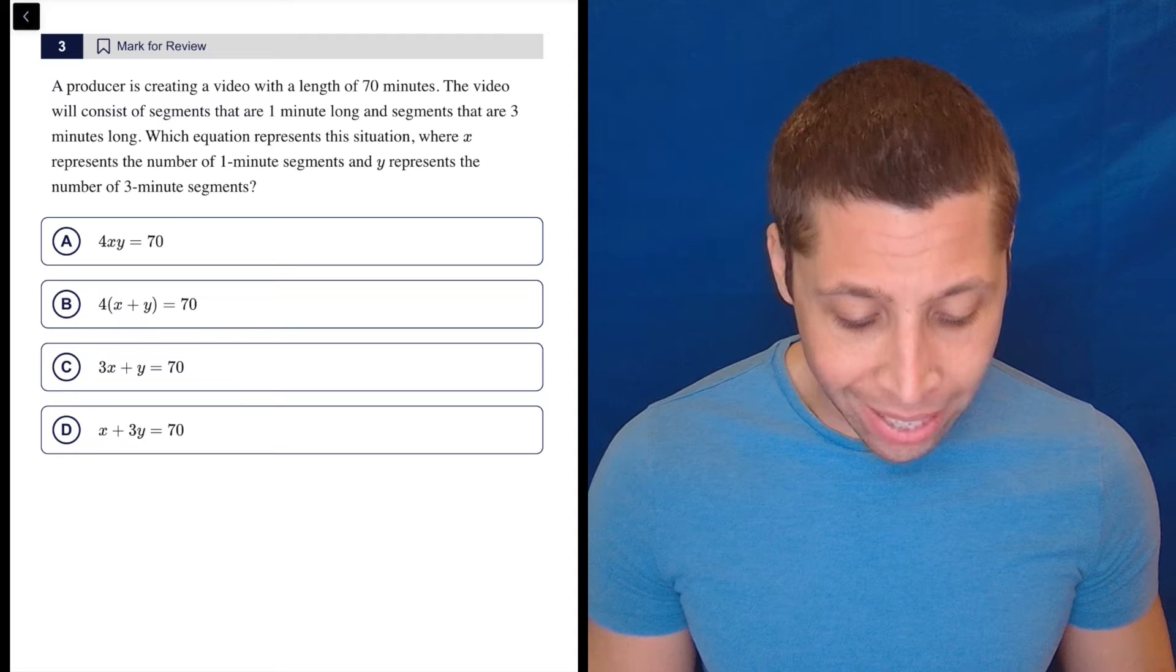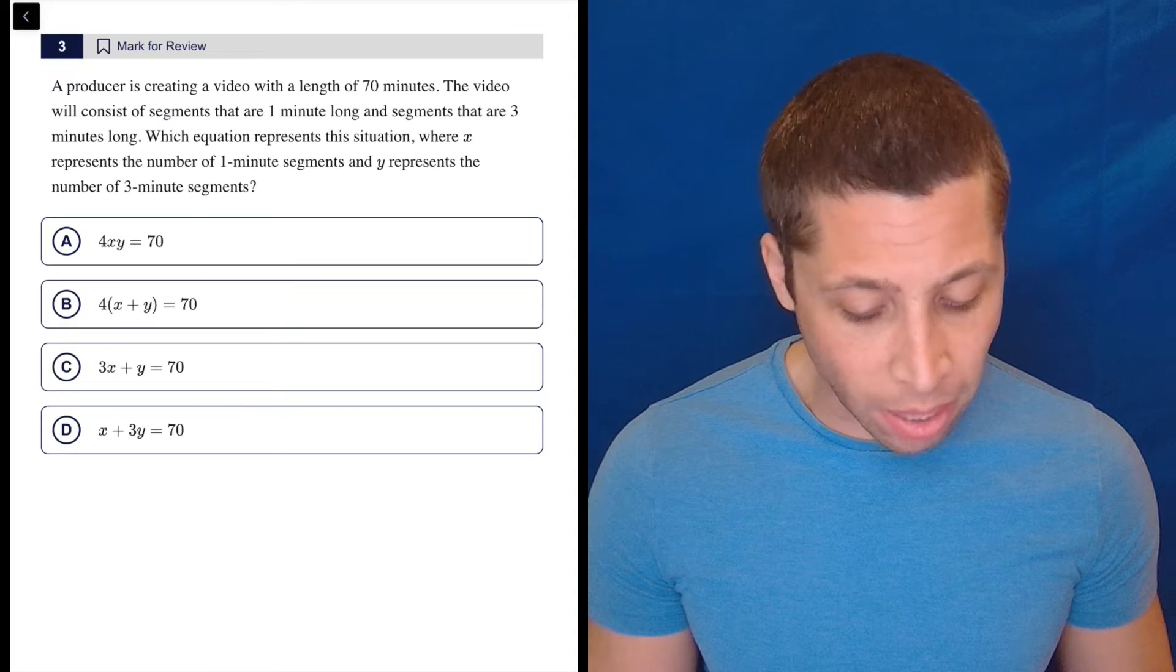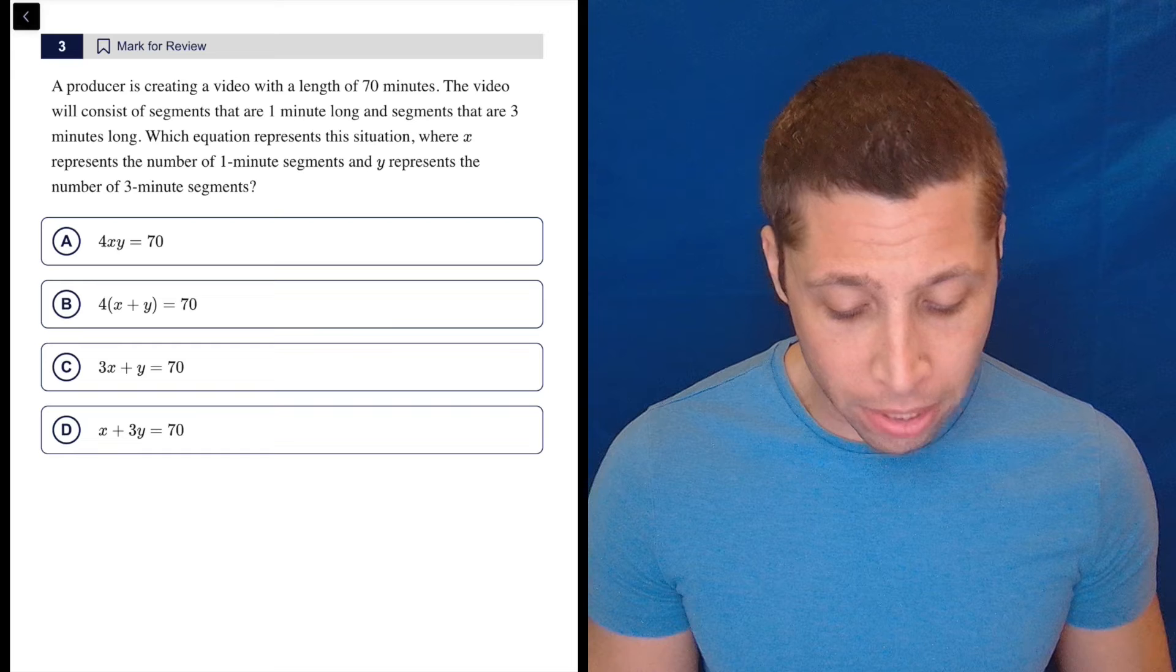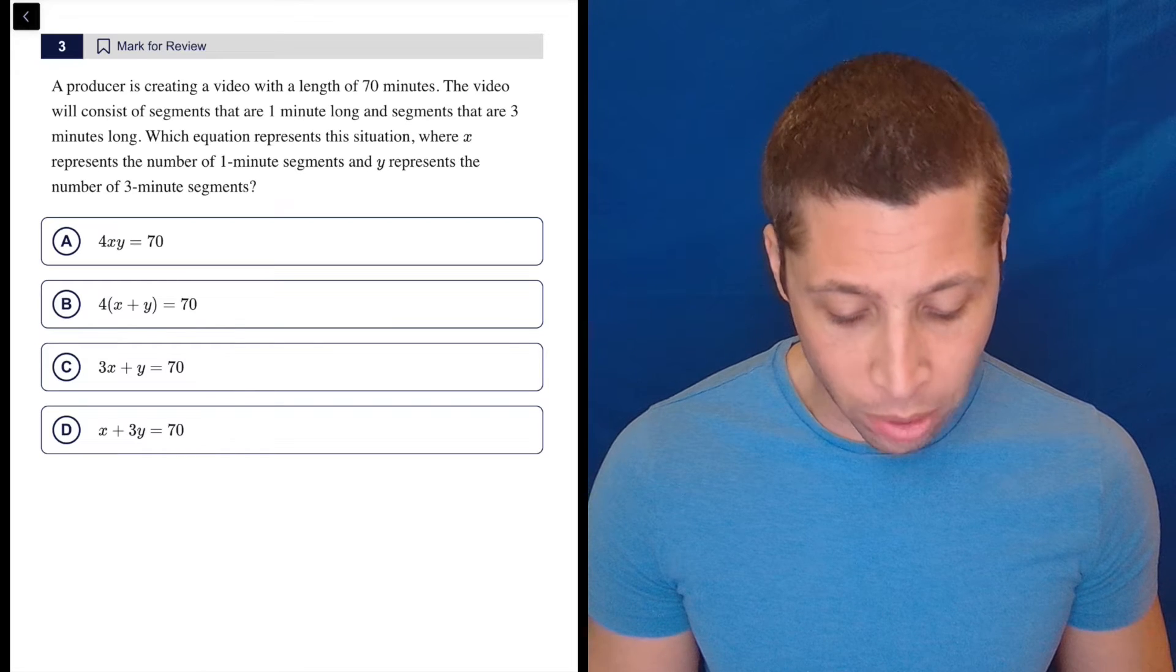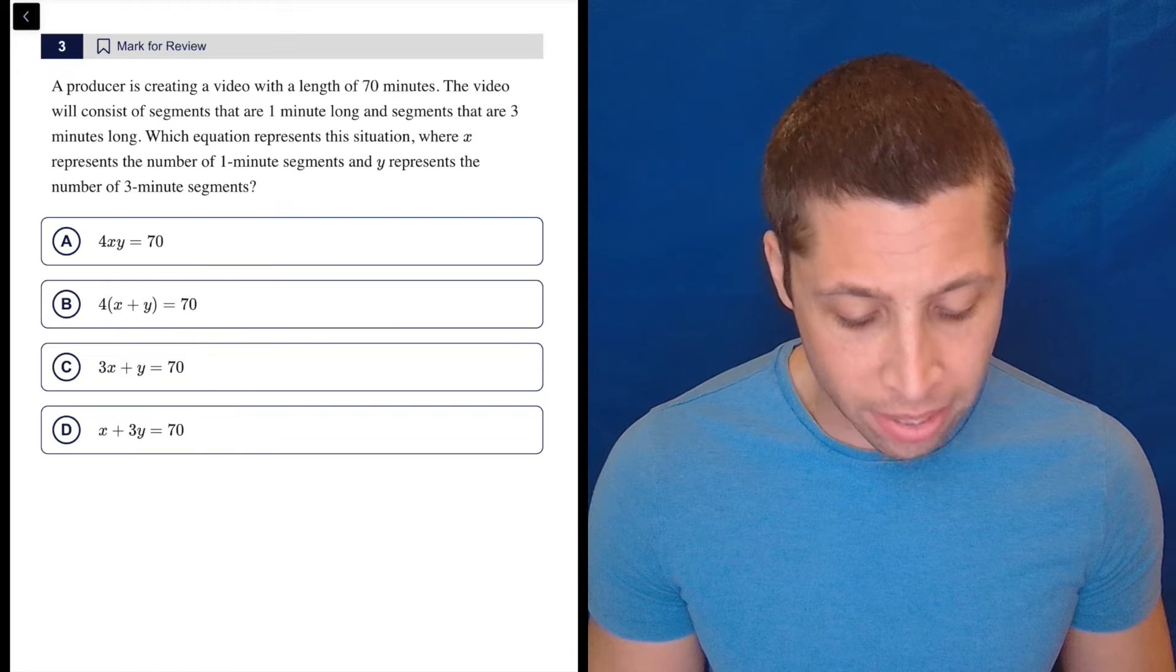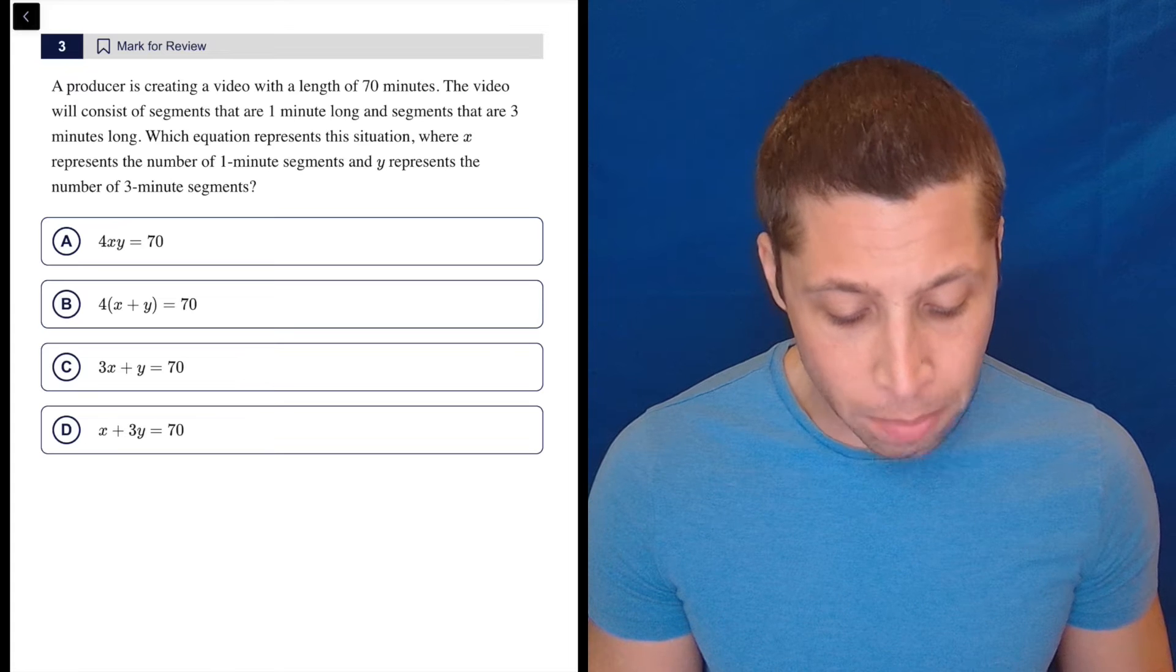A producer is creating a video with a length of 70 minutes. The video will consist of segments that are one minute long and segments that are three minutes long. Which equation represents the situation where X represents the number of one minute segments and Y represents the number of three minute segments?